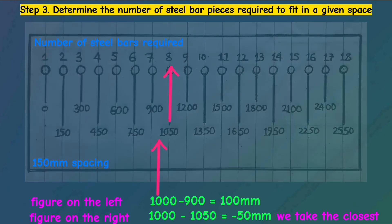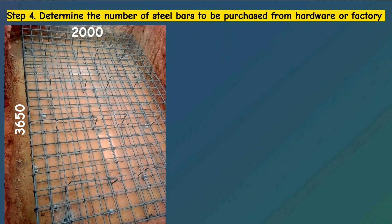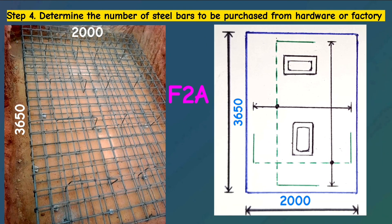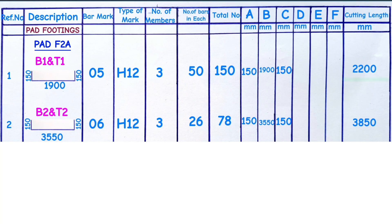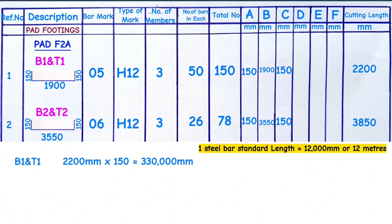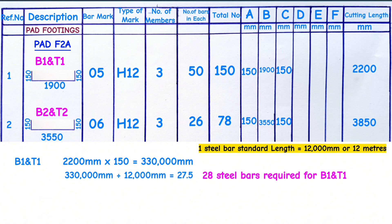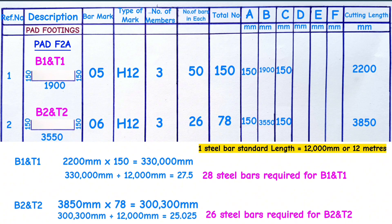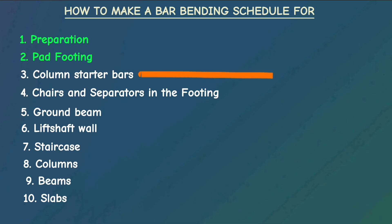When you want to know the number of steel bars to purchase for a given footing — for example footing F2A — the cutting length for a single steel bar is 2.2 meters and we need 150 pieces. 2.2 multiplied by 150 gives 330 meters. The standard length for one steel bar is 12 meters. 330 divided by 12 gives 28 pieces — meaning we need 28 H12 steel bars for footing F2A. That's how we know the number of steel bars required and their cutting length for the foundation. Watch the next video on cutting length for column starter bars.